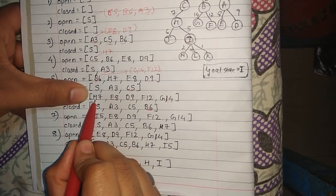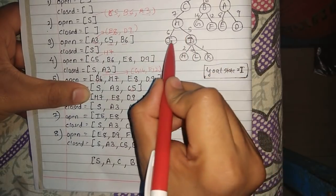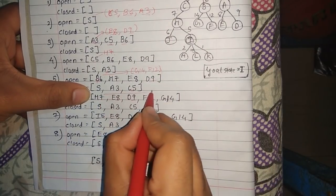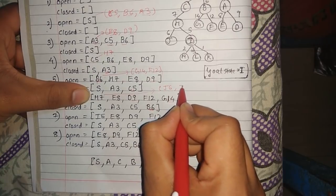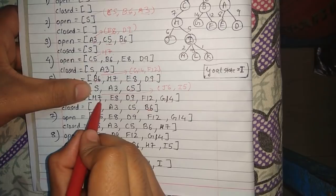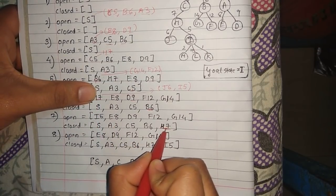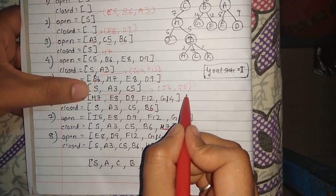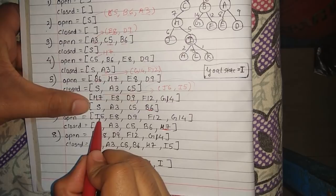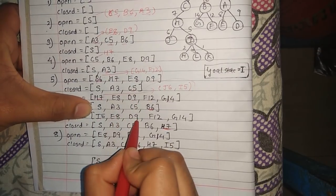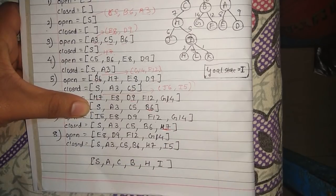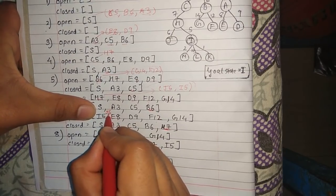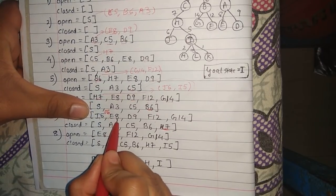Next is h7 — node h is also not the goal state. We expand h. The children of h are j with heuristic value 6 and i with heuristic value 5. We place h into the closed array and sort the open array. Correcting a missed value: the open array becomes i5, j6, e8, d9, f12, g14.